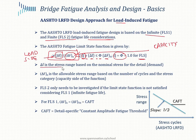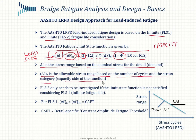Delta F is the stress range based on the nominal stress for the detail — this is the demand. Delta Fn is the allowable stress range based on the number of cycles and the stress category — this is the capacity side. We only need to look at FLS 2 if, after investigating FLS 1, our detail does not pass. So if we do not have infinite fatigue life, we go to FLS 2 to ensure it at least has a finite fatigue life.